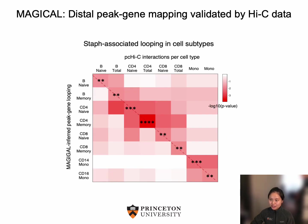After applying MAGICAL to PISCO-integrated datasets, we sought to validate the accuracy of MAGICAL-inferred peak-gene looping. We overlaid the identified regulation units onto a promoter-capture Hi-C dataset that measures physical interactions between gene promoters and distal chromatin sites in primary immune cell subtypes. MAGICAL-identified looping units in each cell type are highly and significantly enriched with physical interactions in the matched cell type but not in the other cell type, suggesting high cell type specificity.